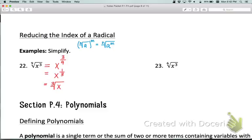So I've taken this down from a ninth root to a cube root, which is a lot nicer to work with. Number 23 is pretty much the same thing. This would be x to the 3/6, which simplifies to x to the 1/2. And then back in radical form, that's going to be the square root of x.